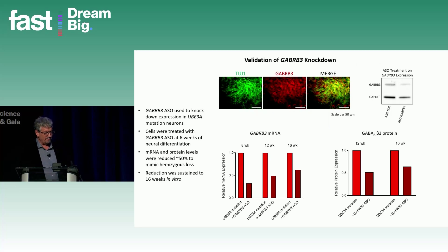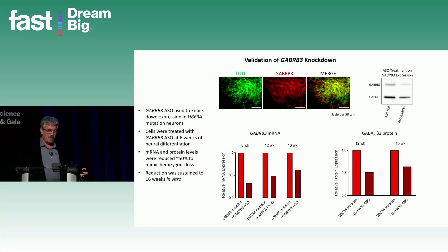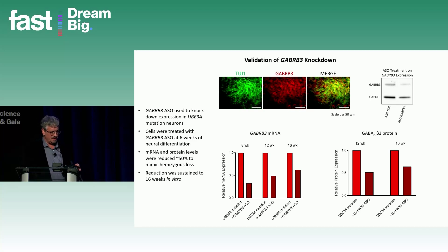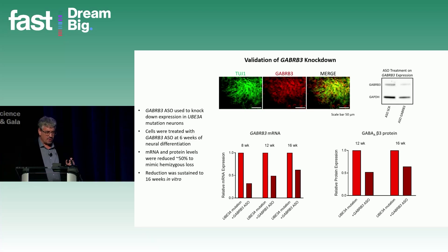We have an ASO targeted to the beta-3 subunit. Treating the cells just once with this ASO produces a very long-lasting decrease in the expression of GABA-RB3 mRNA as well as the protein product, the GABA-beta-3 subunit — a decrease maintained for a long time with a single treatment. We titrate the ASO to produce about a 50% drop to mimic the loss of one copy of this gene, since deletion AS individuals will have approximately a 50% loss.